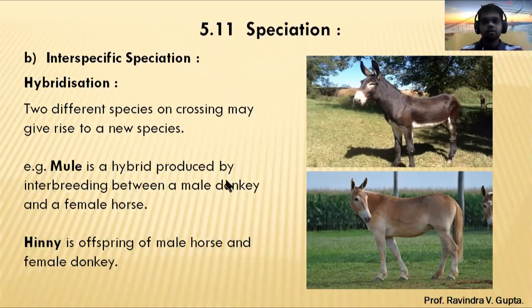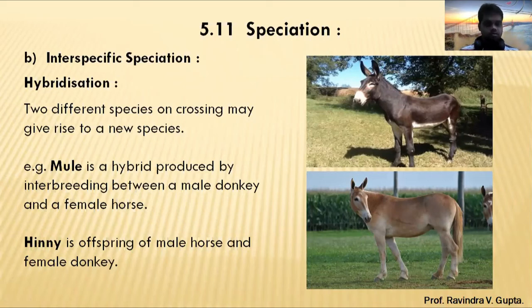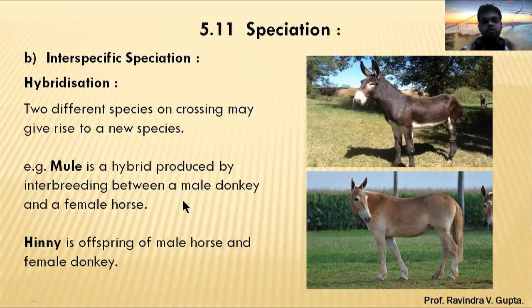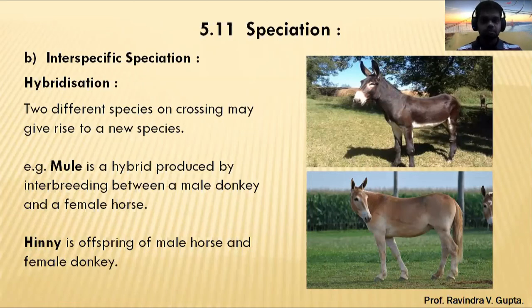A well-known example: a mule is a hybrid produced by interbreeding between a male donkey and a female horse. When we cross a male donkey and a female horse, we get an organism called a mule. The mule shows characters of both parents.